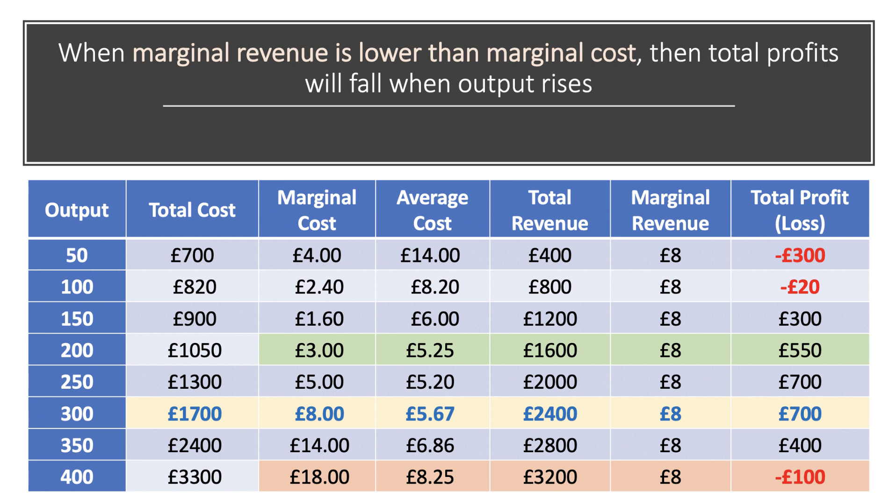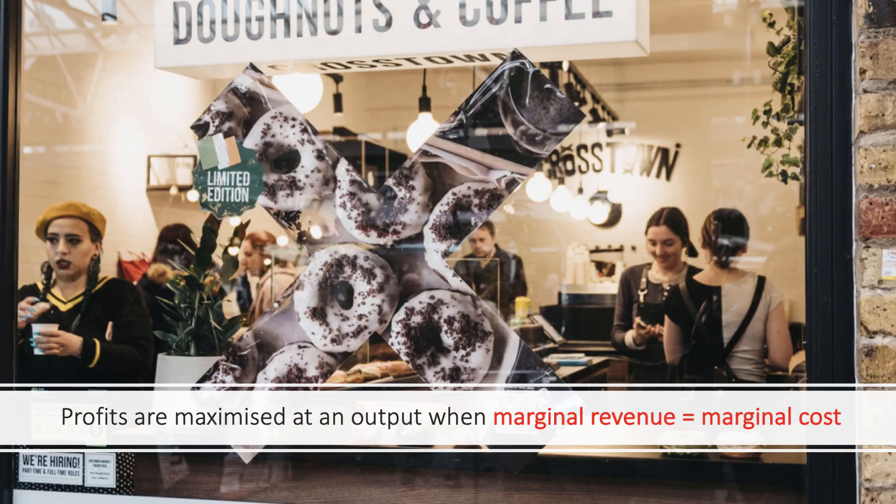Conversely, near the bottom of the data, marginal revenue is now lower than marginal cost. For the batch from 350 to 400, there's a significant marginal cost — perhaps big overtime payments, bringing another machine into play, or machinery getting overused. Marginal cost is very high at 18 pounds per box, and we're still only getting eight pounds back per box in revenue. That loses 10 pounds per box, which is enough to turn profit into a loss.